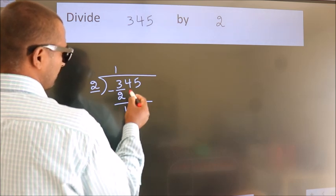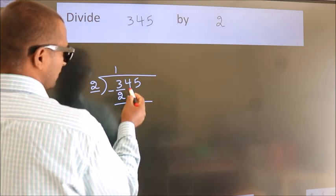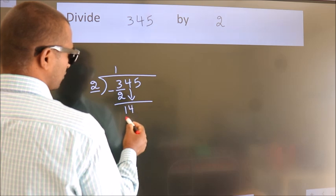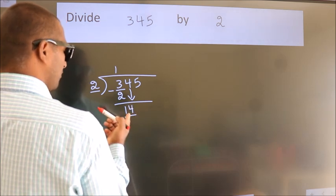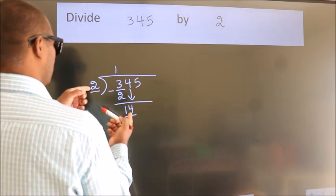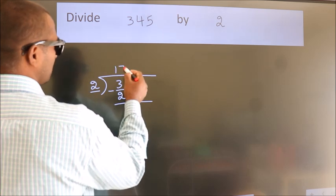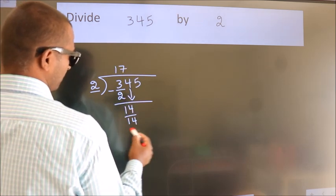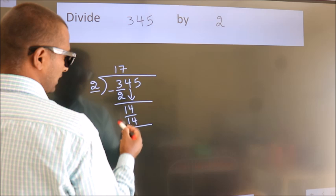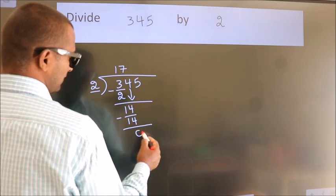After this, bring down the beside number. So 4 down. So 14. When do we get 14? In 2 table, 2 7s, 14. Now we subtract. We get 0.